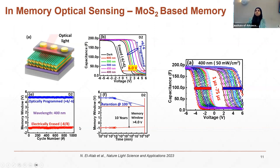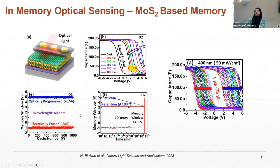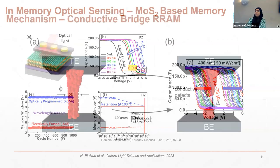We also showed endurance for electrical erasing and optical programming up to 1,000 cycles, using a shutter placed between the laser and the device to open and close 1,000 times. We also showed that with microsecond pulses of a specific wavelength and intensity, we can modulate the memory window, which can be useful for neuromorphic computing applications. That was the first demonstration of in-memory optical sensing using the flash memory architecture.